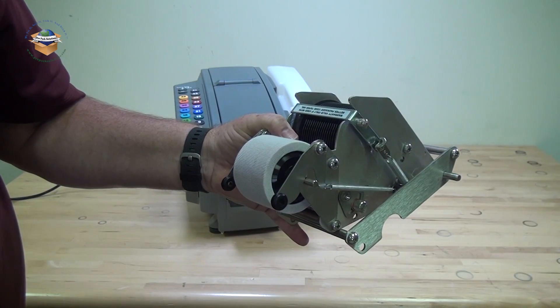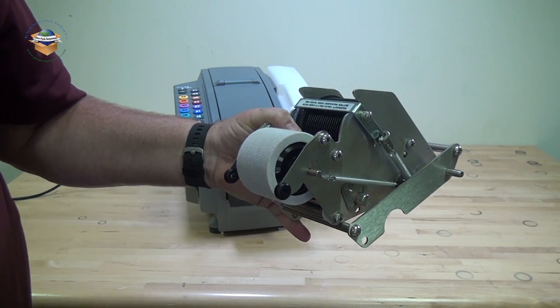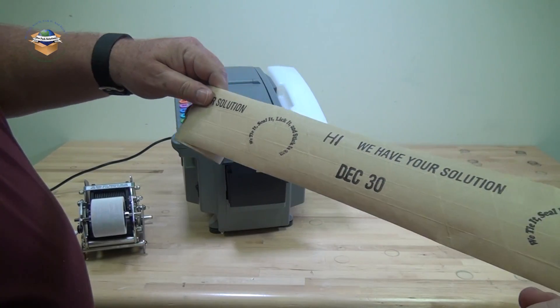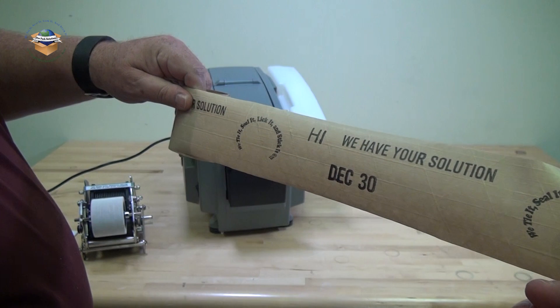For ultimate security, the optional code taper number six allows you to print messages on the tape as it is dispensed. You can print date codes, expiration dates, shift codes, logos, and special messages.